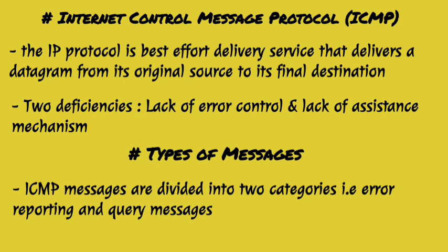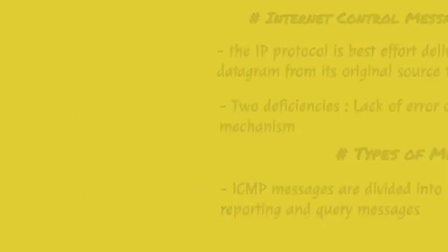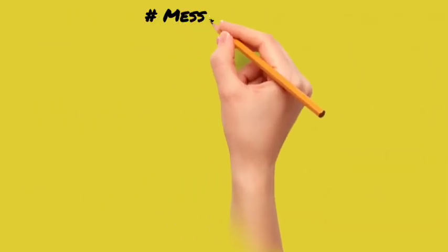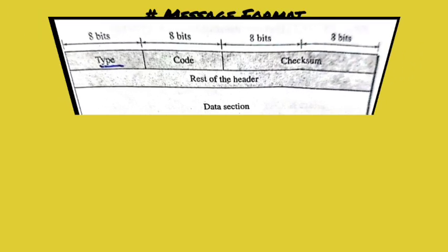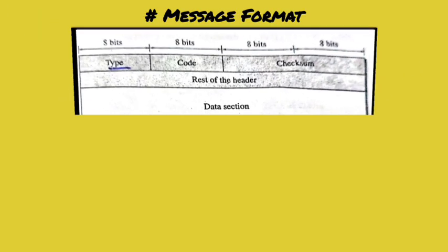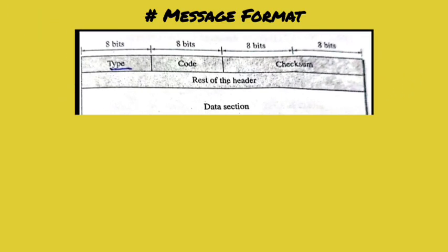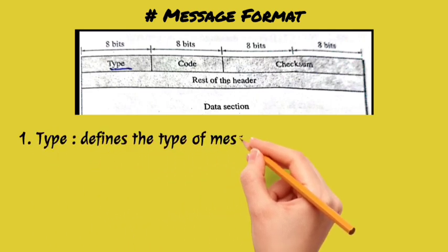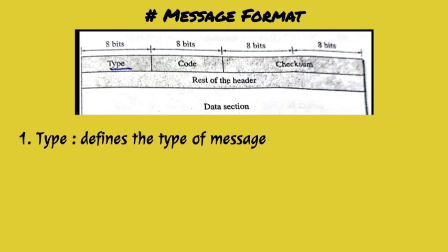In ICMP protocols there are two types of messages. One message is called error control and the other is query message. Error control messages are for error reporting — we report if there is a problem and send IP packets. Query messages are in pairs.